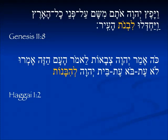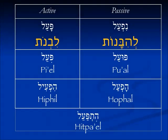In Haggai 1:2: Ko amar Yehovah tzvaot, ha'am hazeh amru lo et bo et bet Yehovah lehibnot — the people are saying it's not time, the time has not come for the temple of God, bet Yehovah, lehibnot, to be built. Remember, this is a Nifal — it's a passive form. We have the extra He, but still it ends in He at the end, so we get the Ot ending. Lehibnot, to be built. Looking at these side by side: livnot is the Pa'al — to build; the Nifal, lehibnot — to be built.